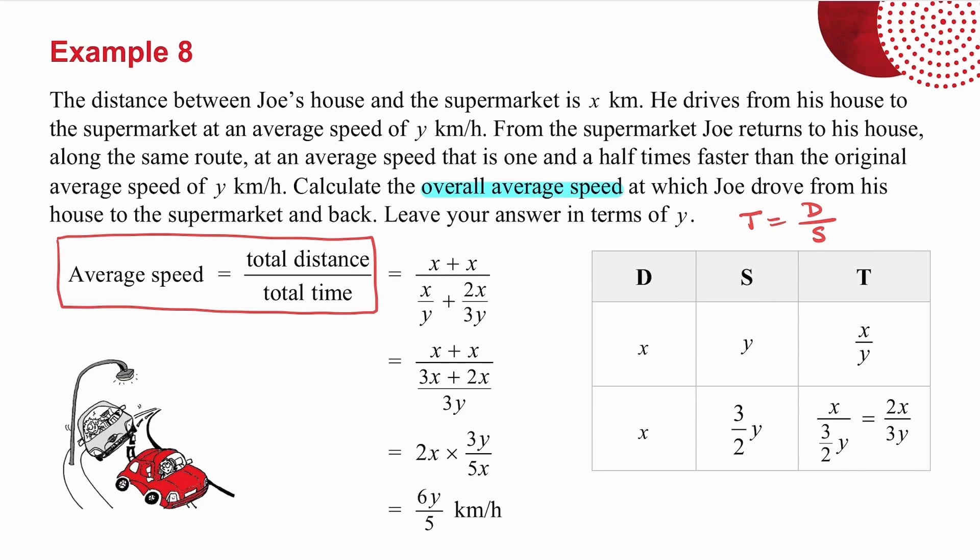So the total distance he travelled was x plus x going to and from the supermarket. The total time was x over y plus 2x over 3y. Get a common denominator with those two fractions of 3y. And on the top you're left with 3x plus 2x. So at the bottom of this fraction, you've got 5x over 3y. And remember when you divide by a fraction, you're going to multiply by the reciprocal. So you're multiplying by 3y over 5x. The x's cancel and you're left with 6y over 5.